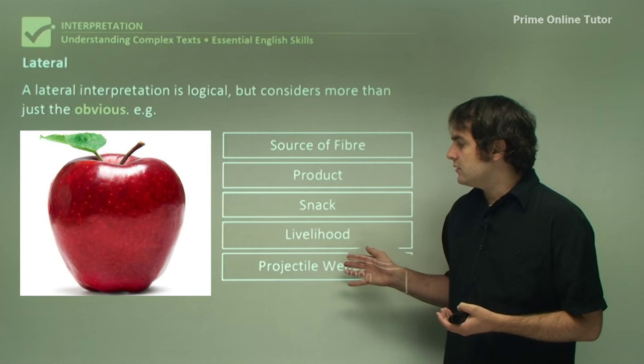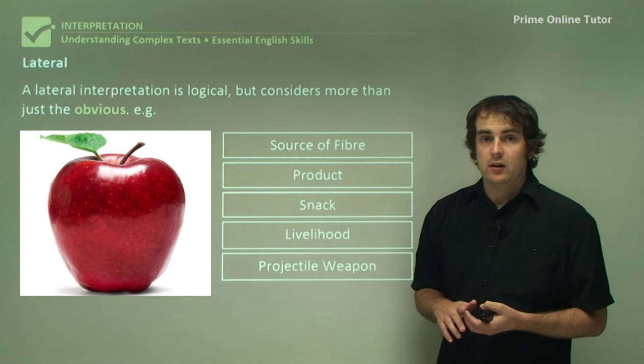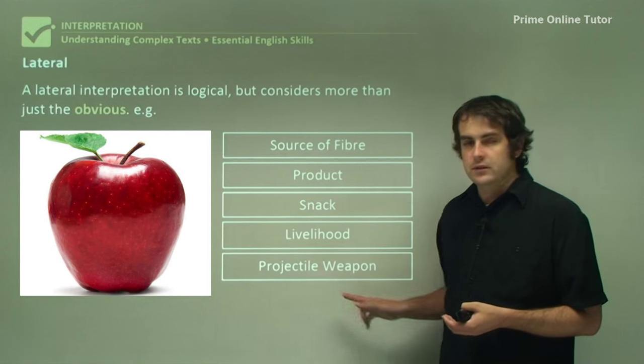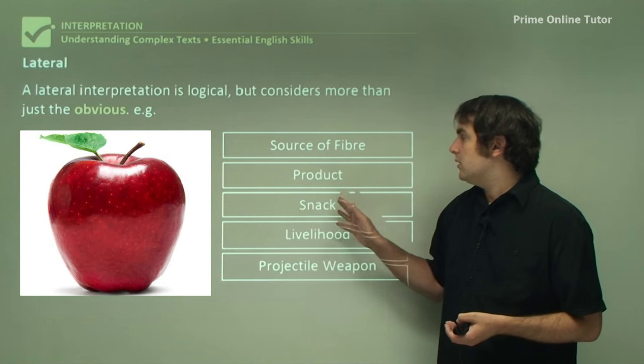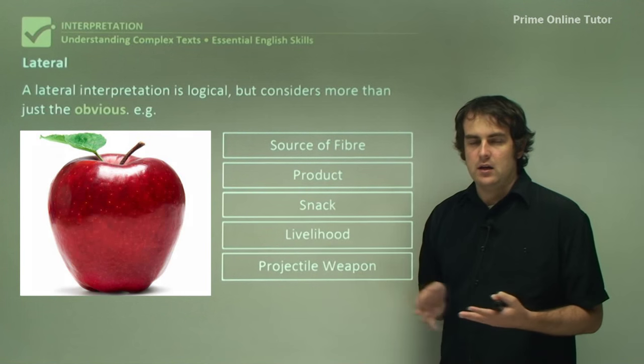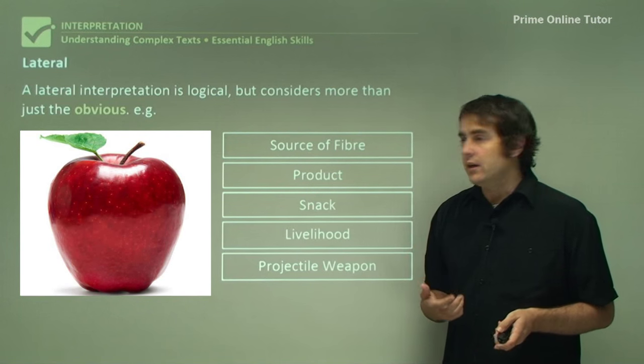The context of the text is very important for this bit. When you do this, it needs to also fit in with the context. So if it's a guide about healthy eating, then projectile weapon is not going to be a consideration here. It's going to be something like the source of fiber or maybe the snack angle. So you need to look at it in context.